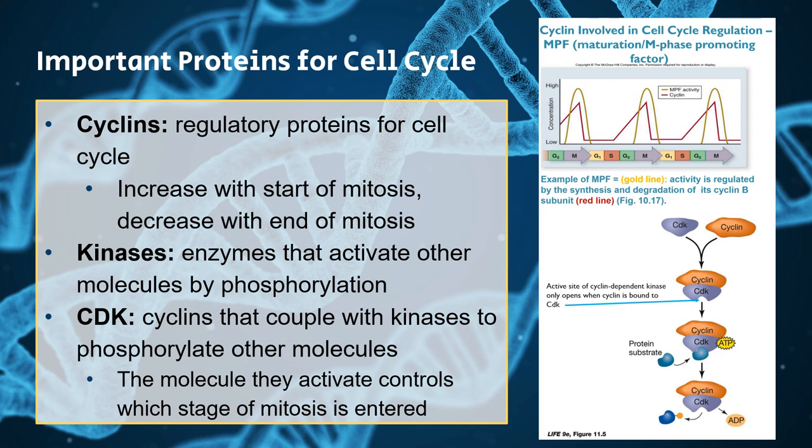Now getting into the cell cycle, there are a lot of important proteins involved. First we have cyclins, which are just proteins for the cell cycle — they increase with the start of mitosis and decrease with the end of mitosis, so they're regulatory proteins produced cyclically to initiate and end that mitotic process. Then we have kinases — and anytime you see -ase, just know that's an enzyme. Kinases are enzymes that activate other molecules via phosphorylation. And then we have CDKs, or cyclin-dependent kinases — cyclins that couple with kinases to phosphorylate other molecules, determining which stage of mitosis you are entering.